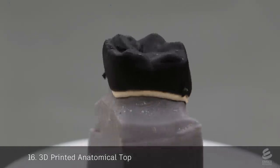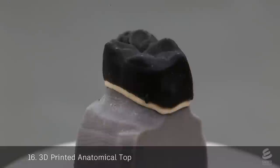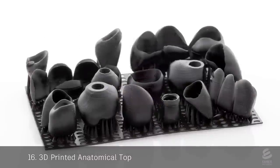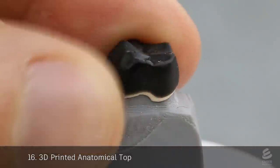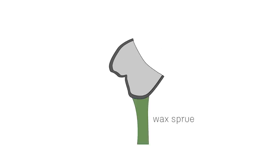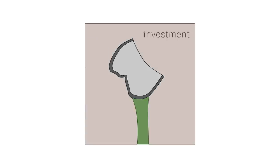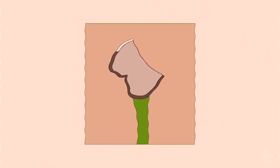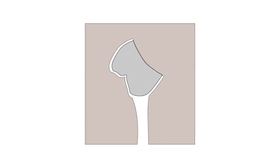To create the porcelain layer, an anatomical top is first 3D printed on Ember in castable resin. The top slides onto the opaque casting. The casting and top are then attached to a wax sprue. The part is surrounded again with liquid investment. After it solidifies, it's put into an oven where the wax and 3D printed top are melted out, leaving the metal coping embedded inside the investment.